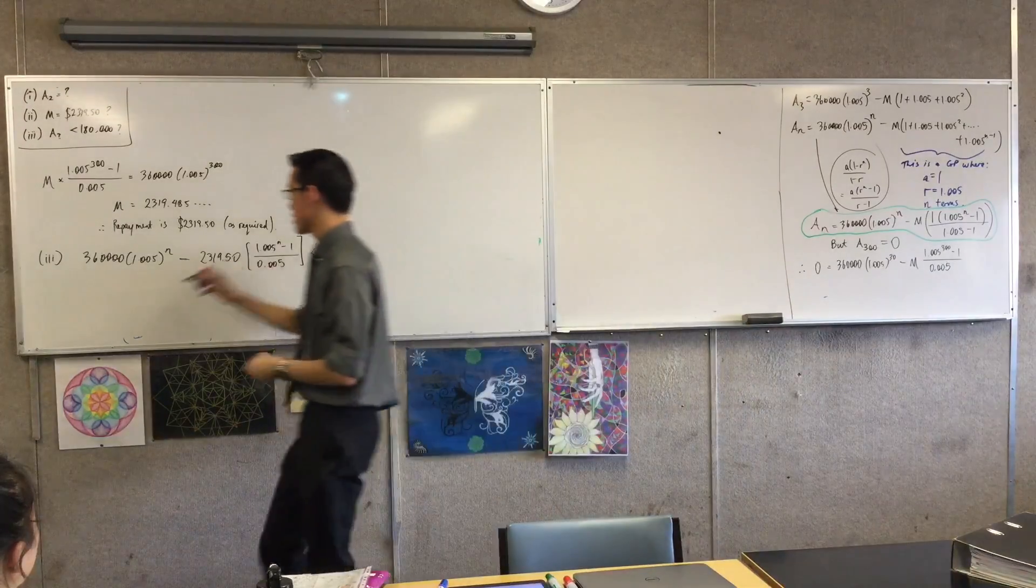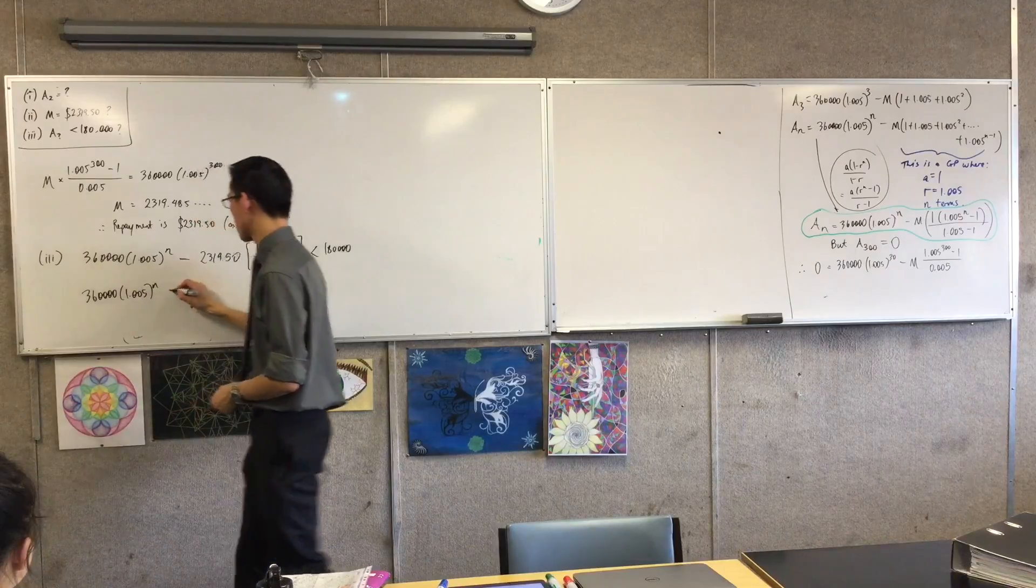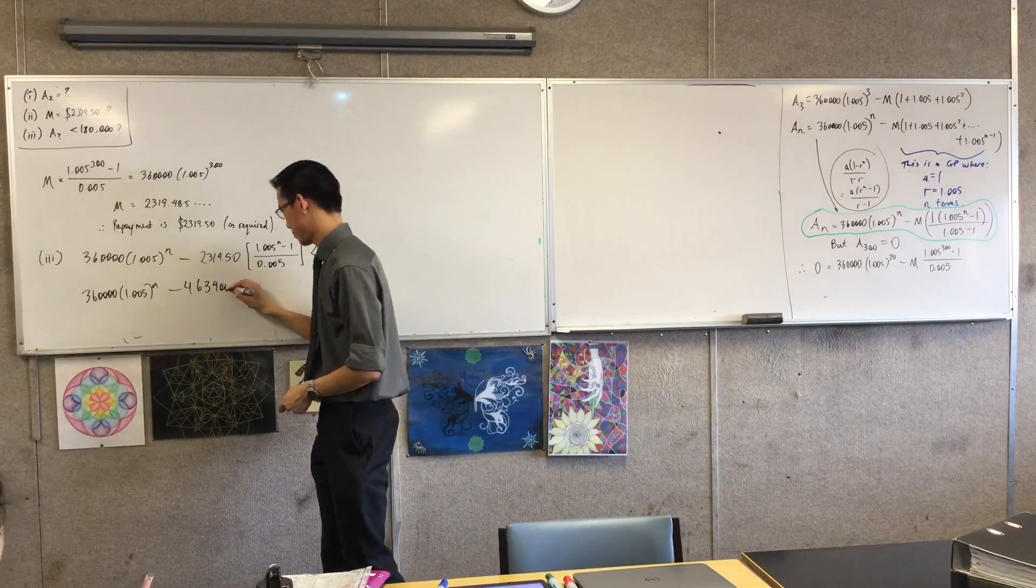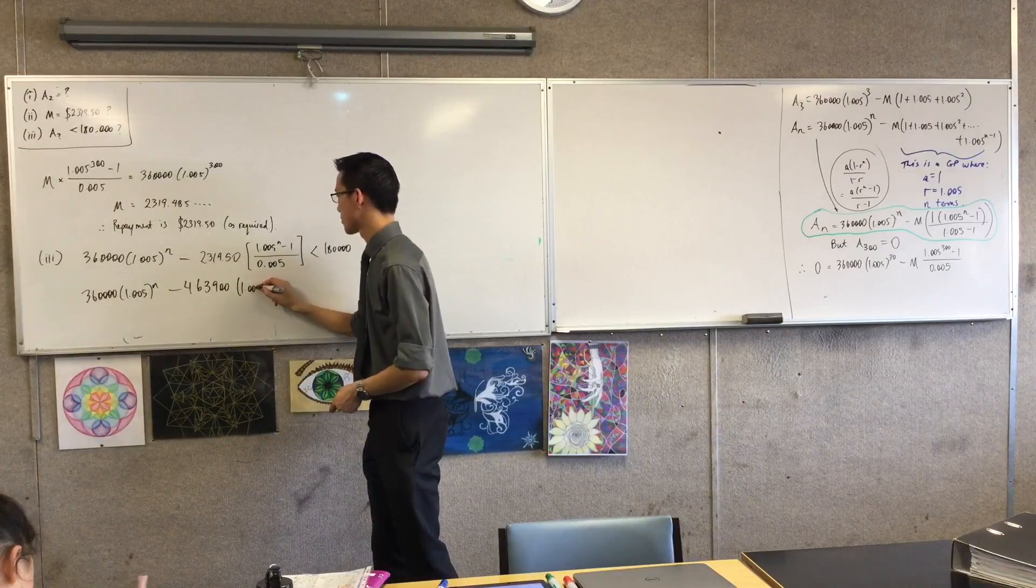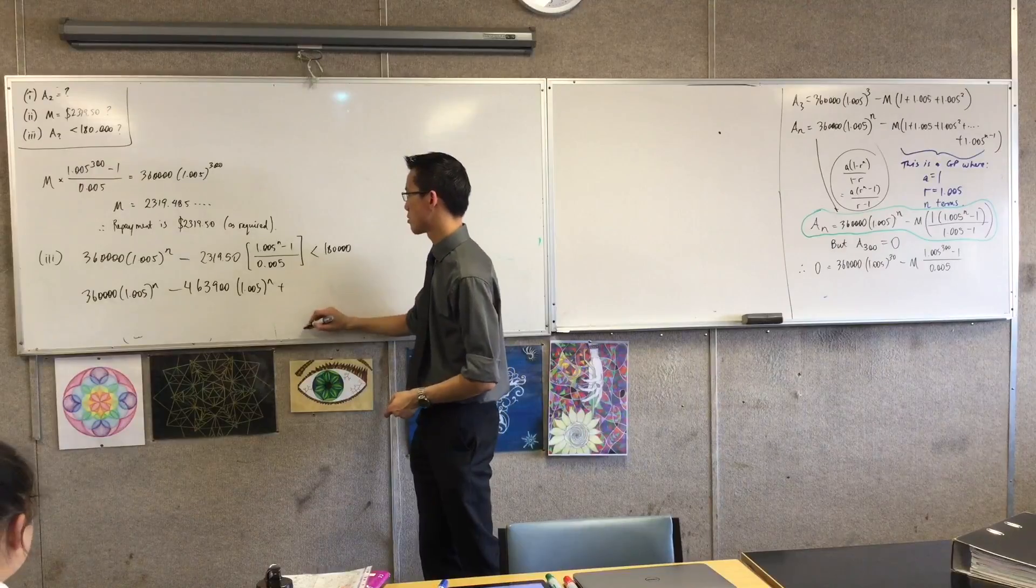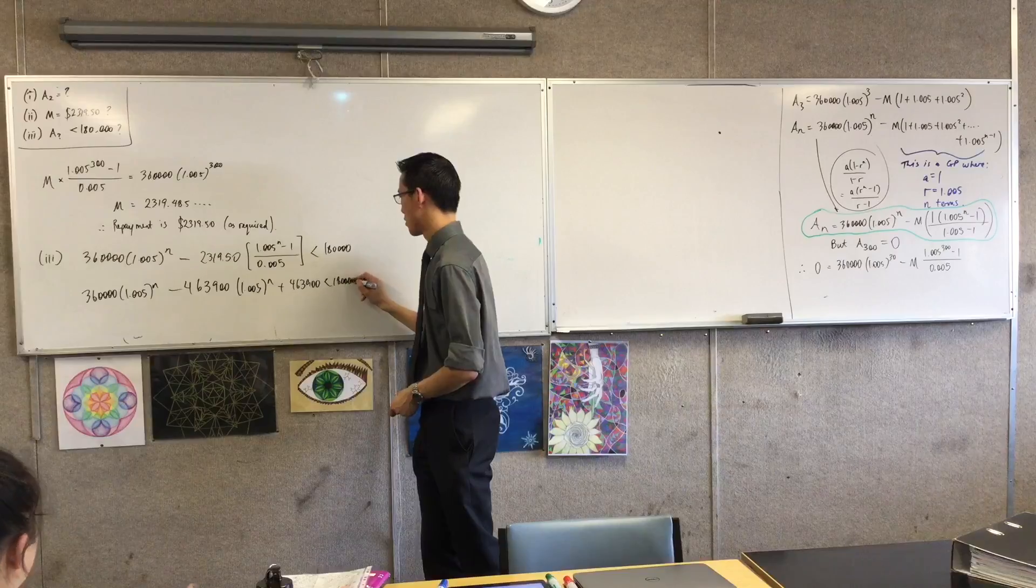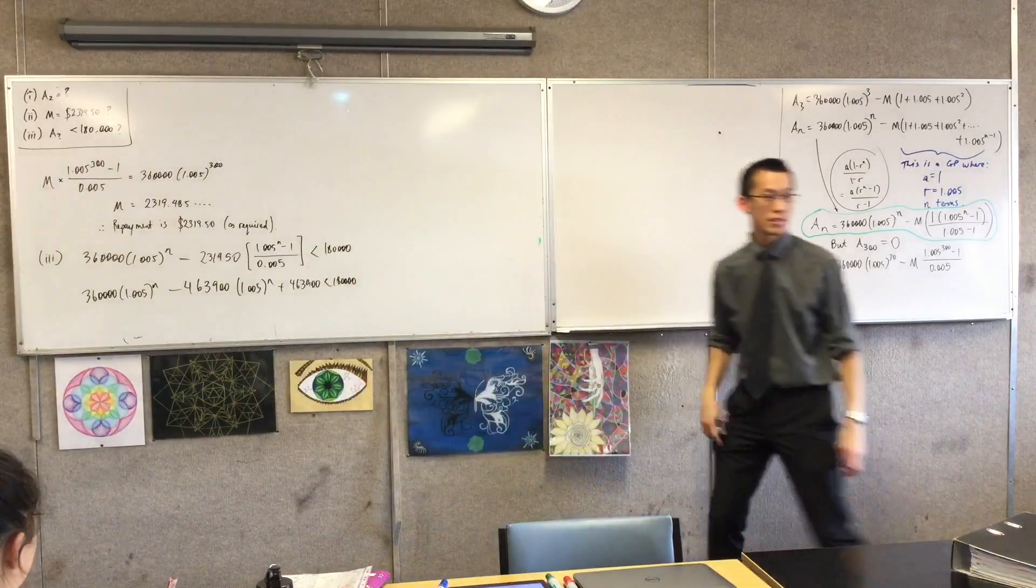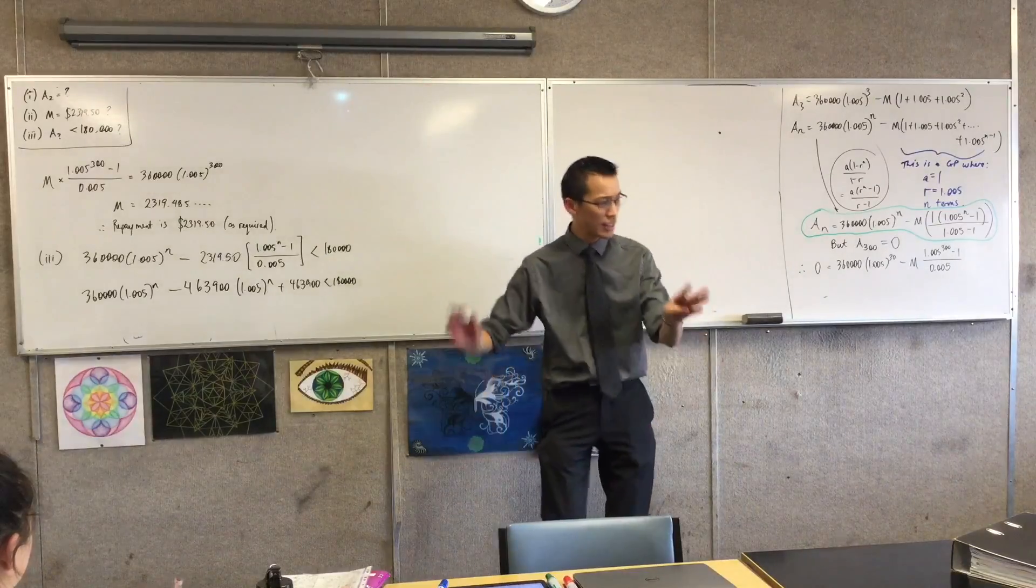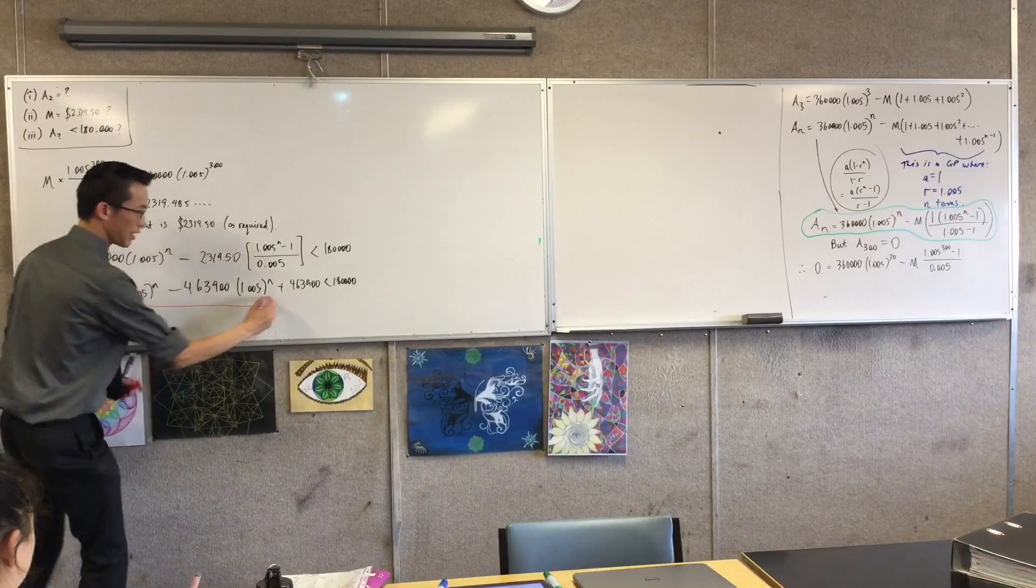So, when you divide through, I think this is what you should do. Yeah, let me check what I've written down. It's 4,639.